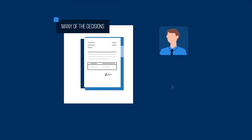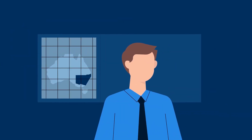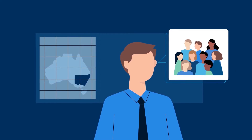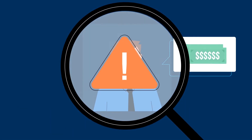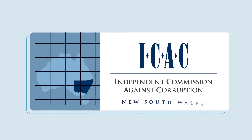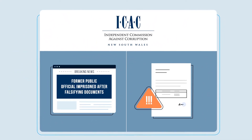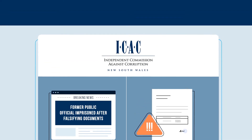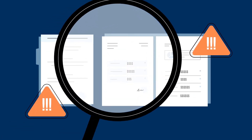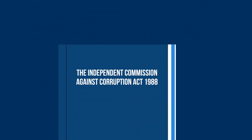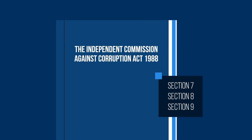Many of these decisions involve transferring something of value into private hands. Public officials are required to make these decisions in the best interests of the people of New South Wales, but if they use their position to create benefits for themselves or their associates, then they may be acting corruptly. In New South Wales, the Independent Commission Against Corruption, or ICAC, is responsible for exposing and preventing corruption in the public sector. It has considerable covert and coercive powers to investigate allegations of serious or systemic corrupt conduct. The official definition of corruption is defined in sections 7, 8 and 9 of the Independent Commission Against Corruption Act 1988.